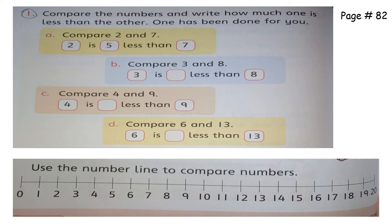Now come to page 84. I'm going to do four parts and you have to do the rest by yourself. I will solve this using the number line at the bottom of your page. The first one is already done. Look at b part: compare the numbers and write how much one is less than the other. The b part is compare three and eight — we have to see how much three is less than eight. Where is three on the number line? Here. Where is eight? Here.